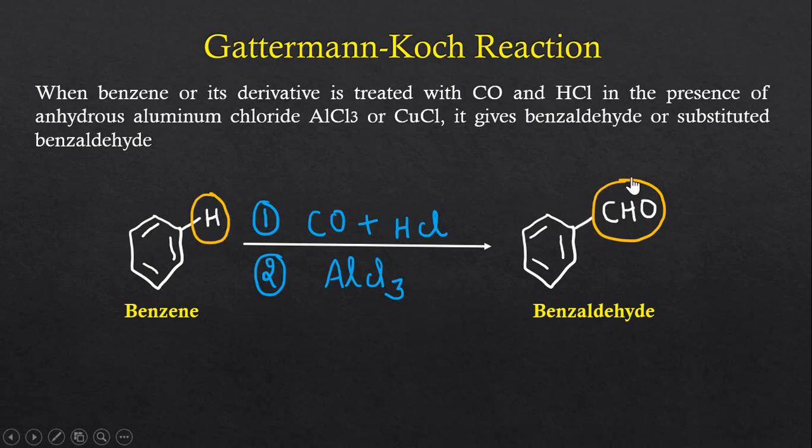Here you can see that this hydrogen atom of the benzene ring is substituted with this formyl group. The CHO group is known as formyl group. So now let us discuss the mechanism of this reaction.